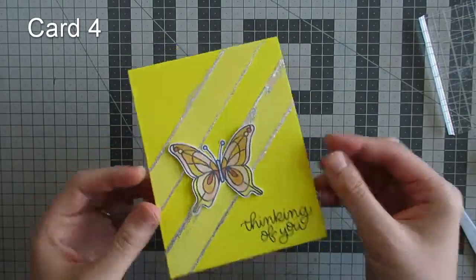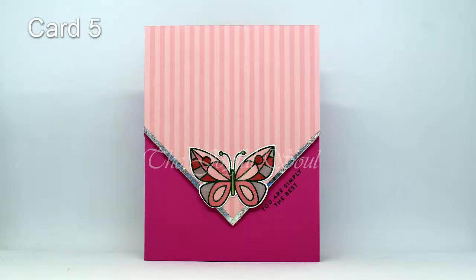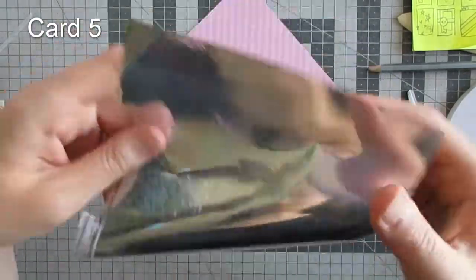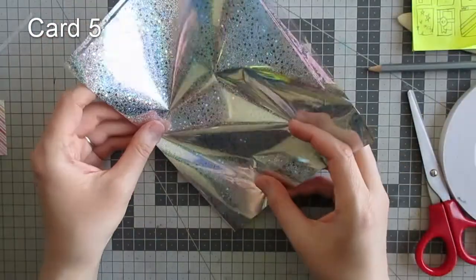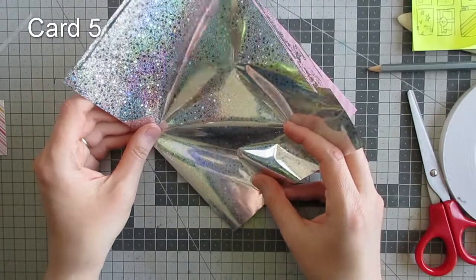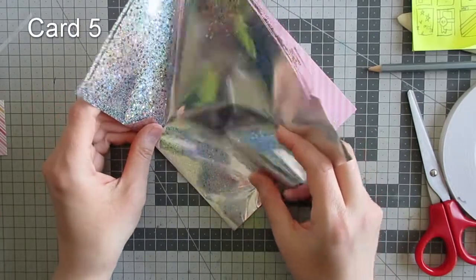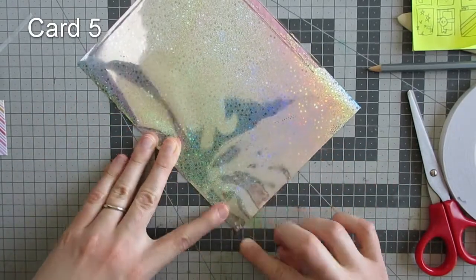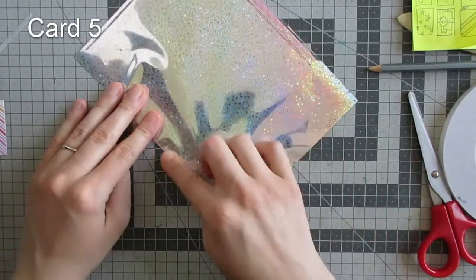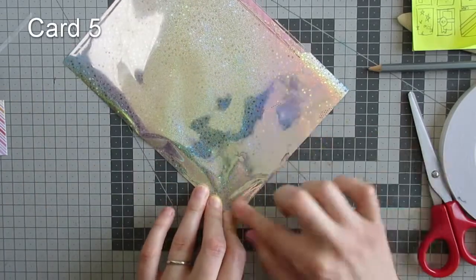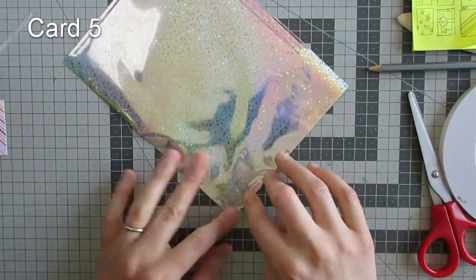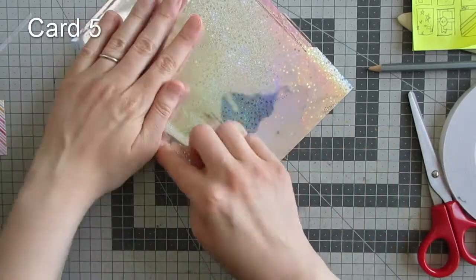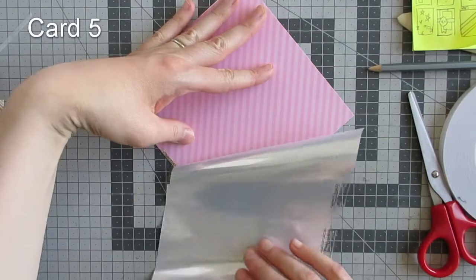My fifth card: I decided to do some more foiling. Rather than using the glue pen, I used some double-sided tape. This card kit is actually the very first time I've tried using foil. I've seen plenty of videos on YouTube of people using foil, but this is my first time using it myself.